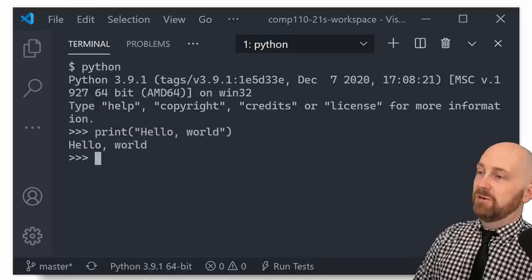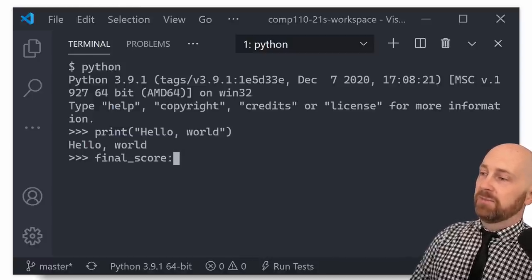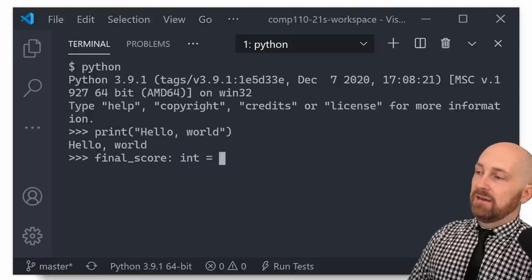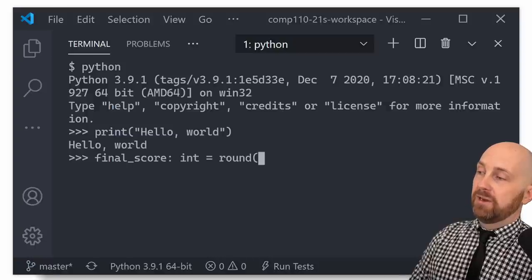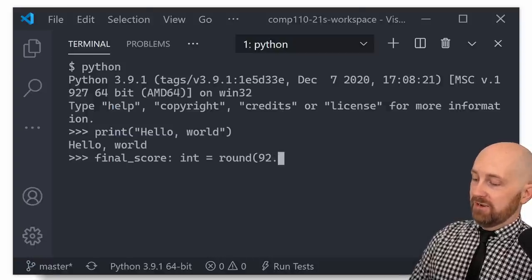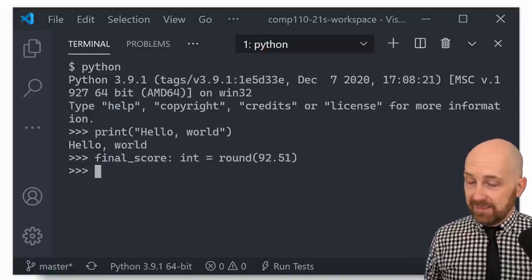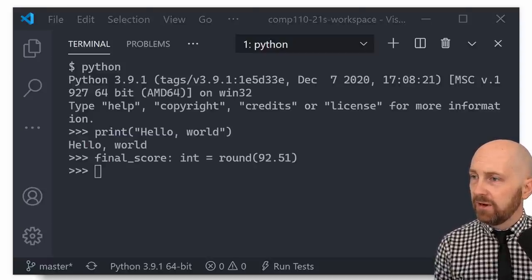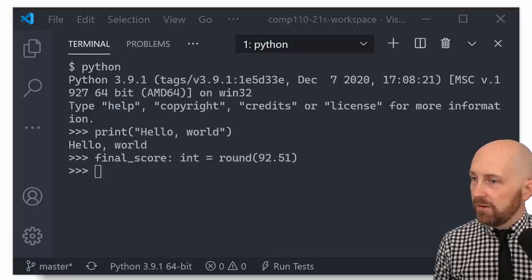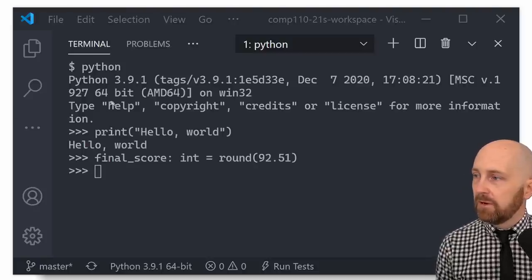So if I were to say my final score is a variable that is maybe an integer and the final score is going to be my grade rounded. So my grade might be 92.51. Right. And so what is final score going to be? Well, this is a function call. This round, let me highlight it here.